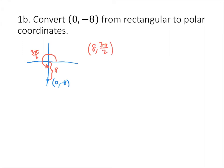That's not the only way to do it. Instead of rotating counterclockwise, we can rotate clockwise by 90°, which is -π/2. So the polar coordinates written that way would be (8, -π/2). Both of these are valid answers.